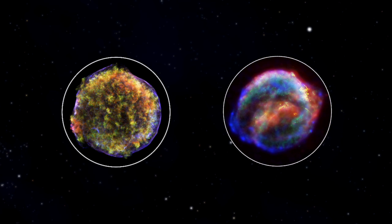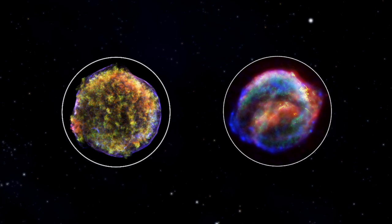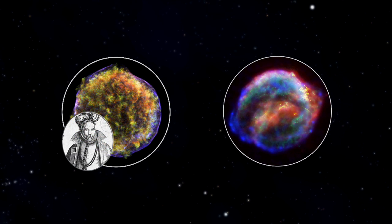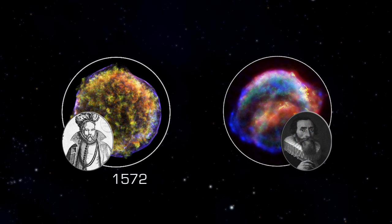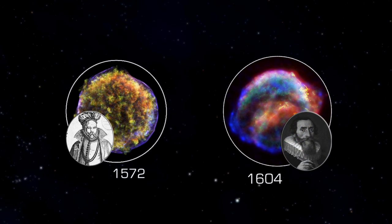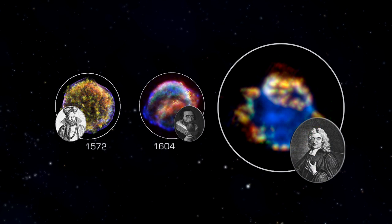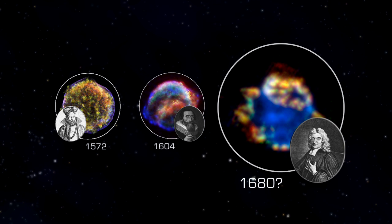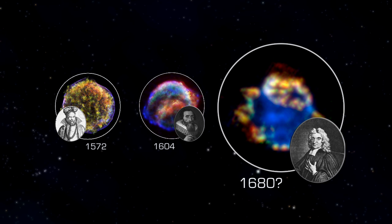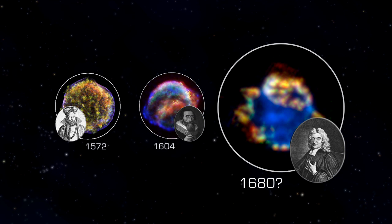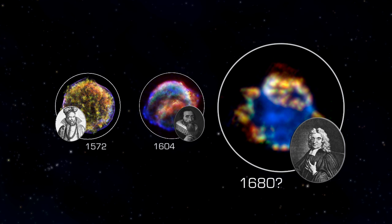A Type IIb is fainter than the earlier Type Ib supernovas noted by Tycho Brahe in 1572 and Johannes Kepler in 1604. Interestingly, the Royal astronomer Flamsteed noted a star near Cass A in August of 1680 with a brightness consistent with a Type IIb supernova at that distance. So, maybe it was seen after all.